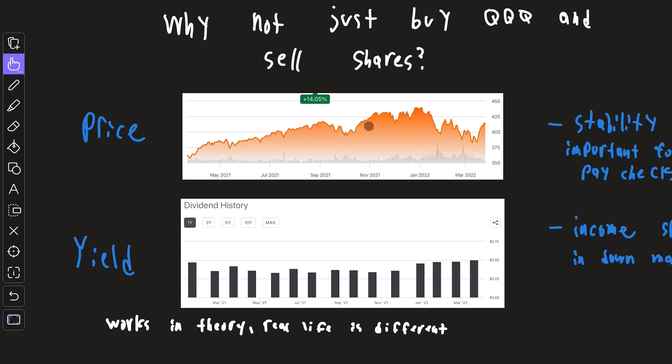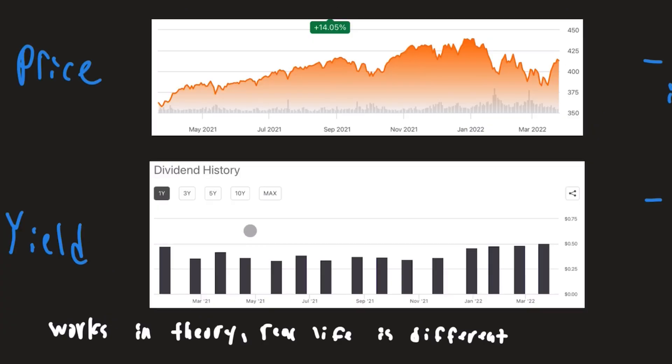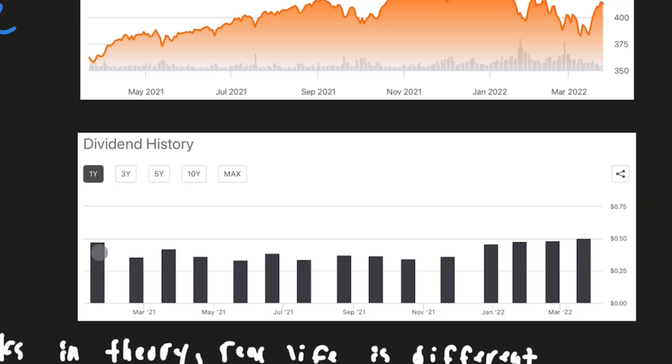Right here we have the one-year price action of the S&P 500, and here is the one-year dividend history of XYLD. The major takeaway is that volatility is significantly higher when it comes to price action, because this represents what other people are willing to pay for this asset over time. The dividend history, on the other hand, is simply the amount of income this asset can generate.